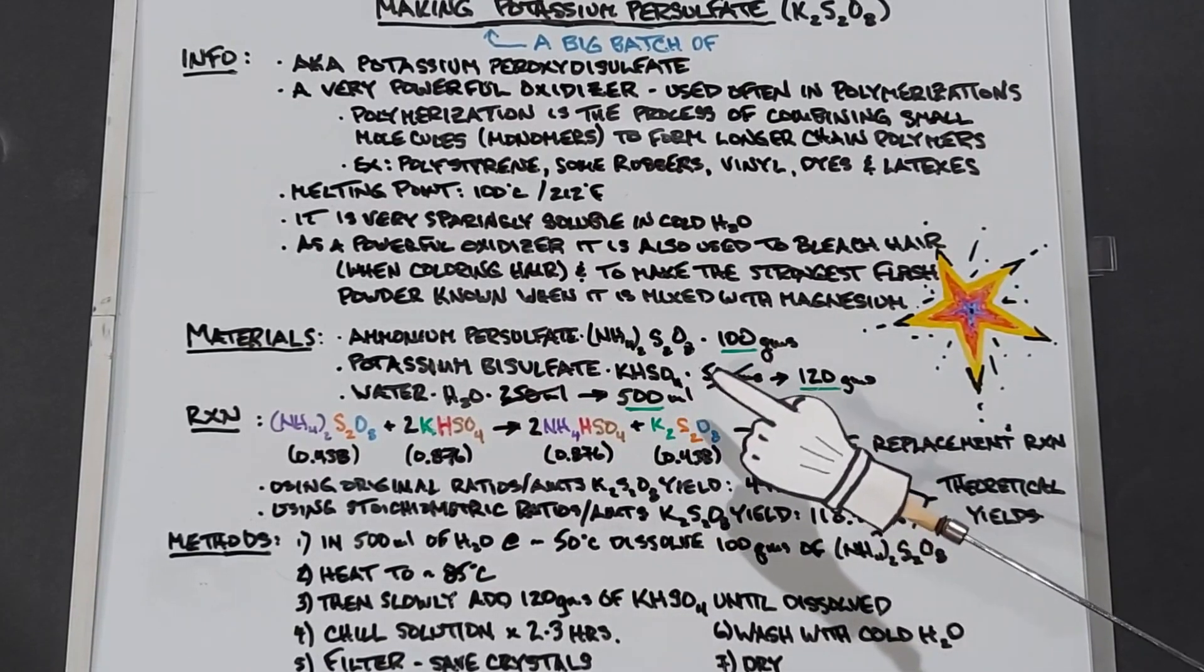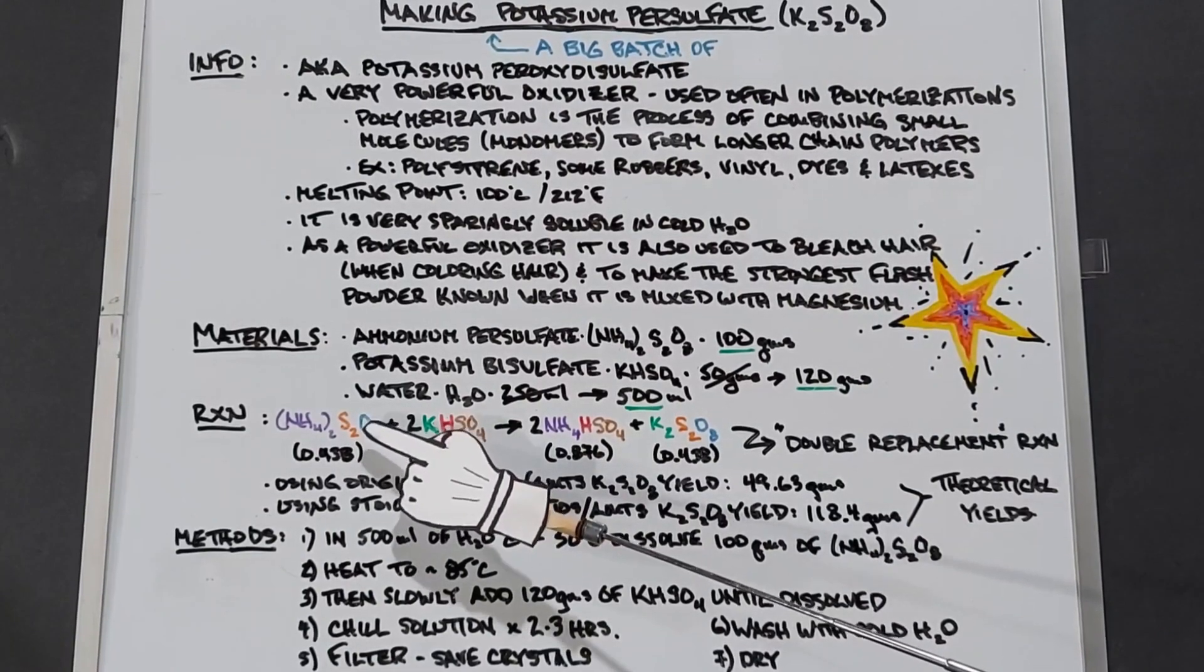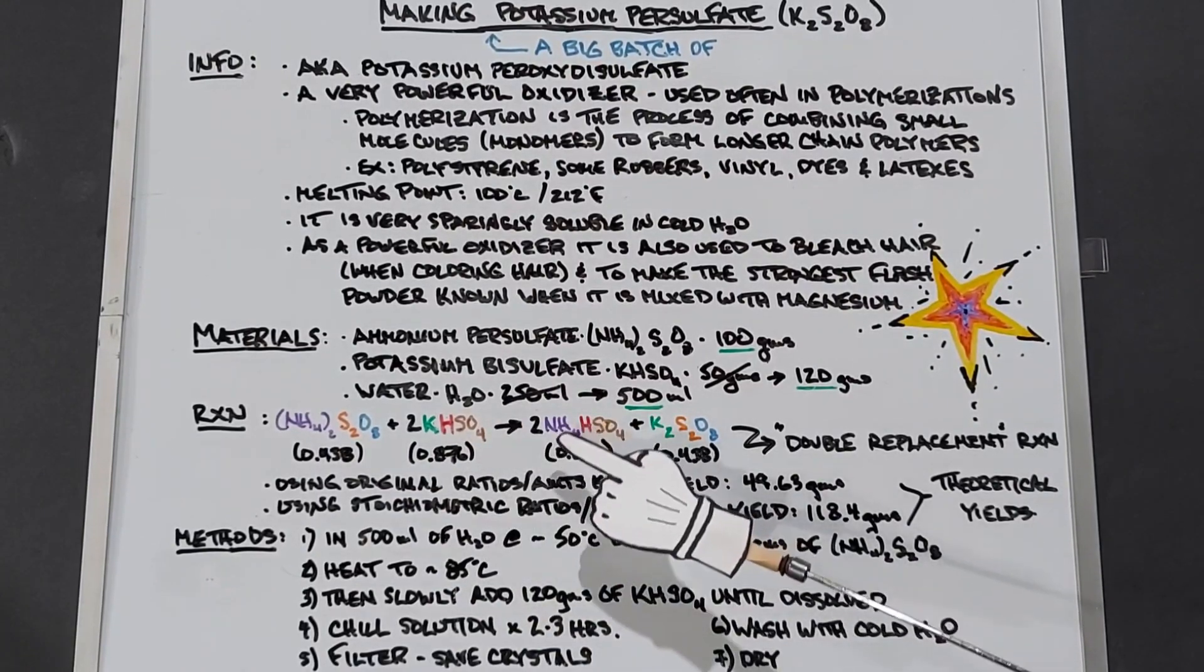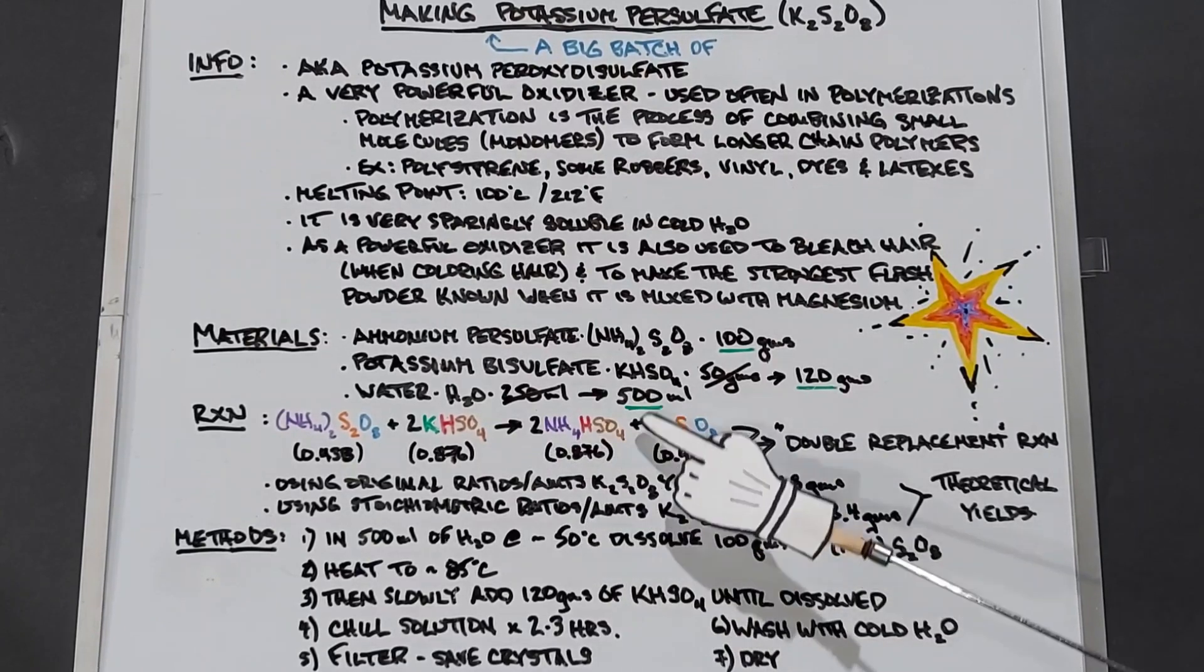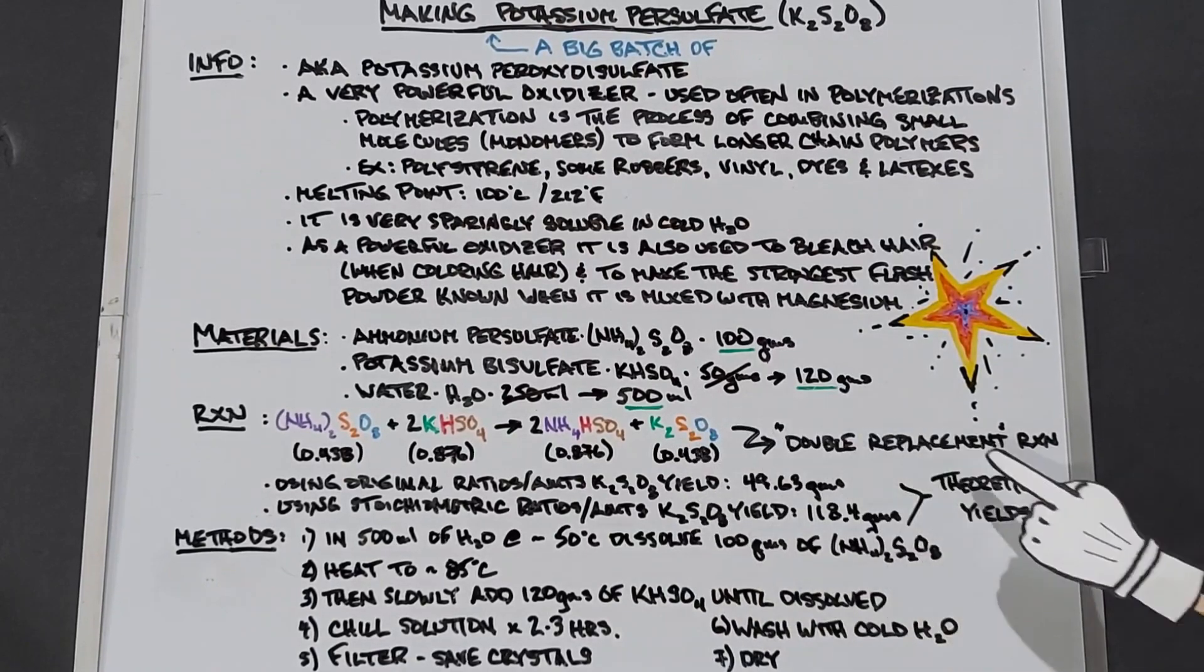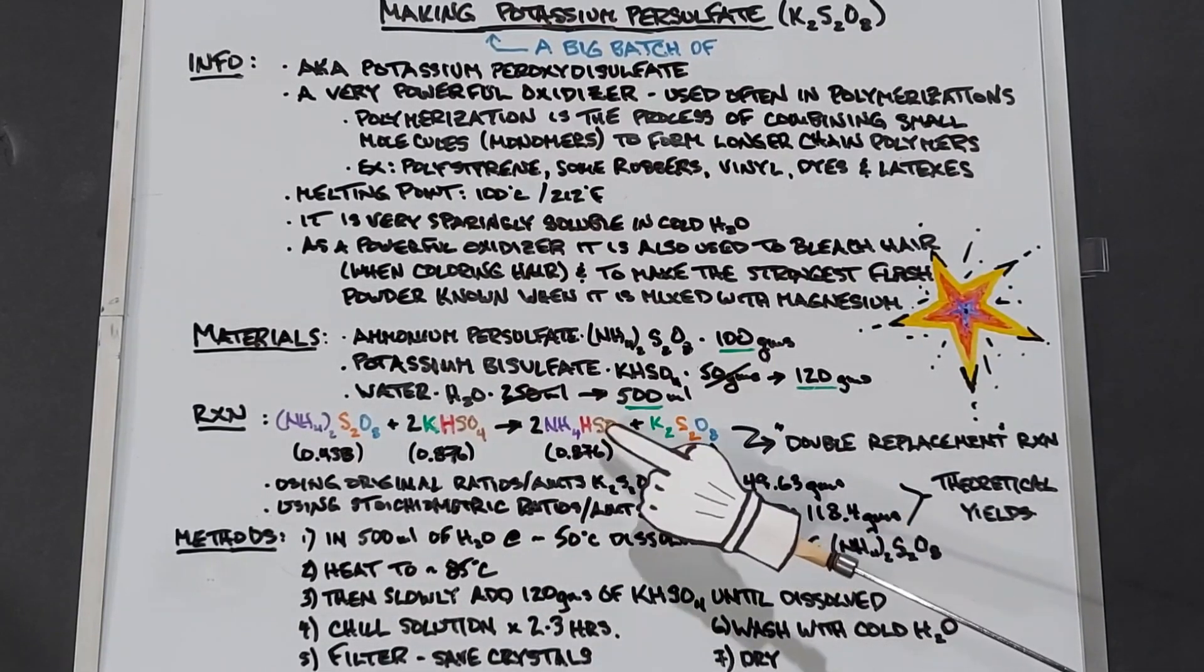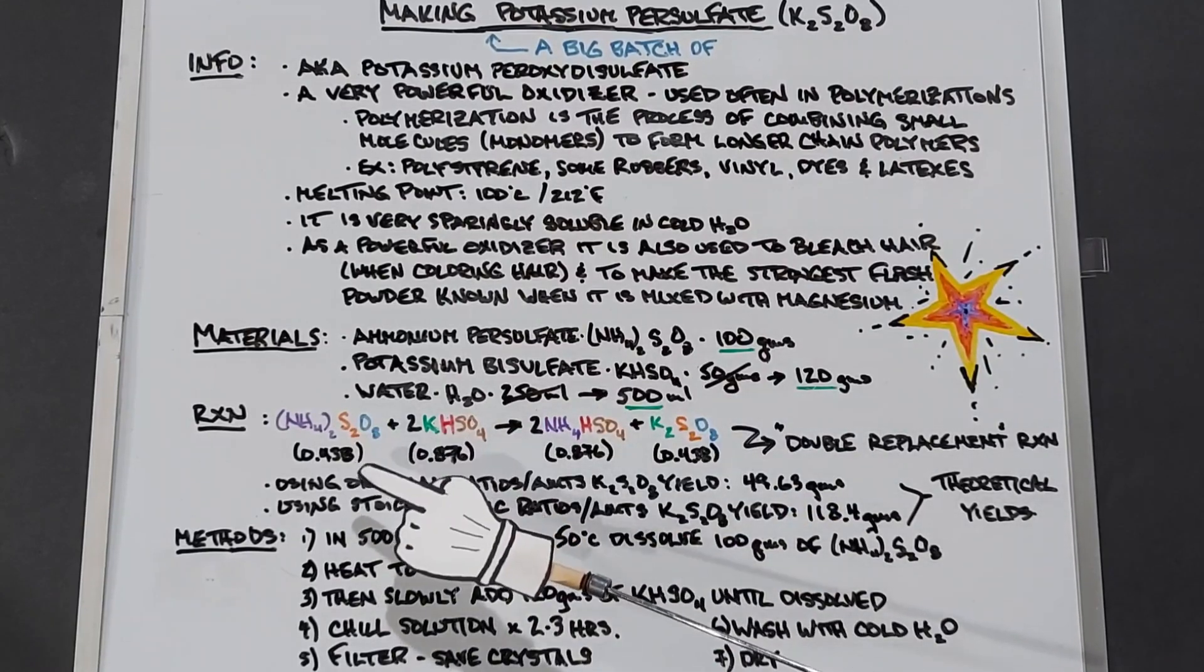Water will go from 250 milliliters, double it to 500 milliliters. The reaction is as follows. The (NH4)2S2O8, which is the ammonium persulfate, is going to be combined with two of the potassium bisulfates, KHSO4, and that will yield 2NH4HSO4, which is ammonium bisulfate, plus K2S2O8, potassium persulfate. This is a double replacement reaction because you're replacing the K here with NH4, and over here you've moved your NH4 to the SO4. Double replacement, just like it sounds.